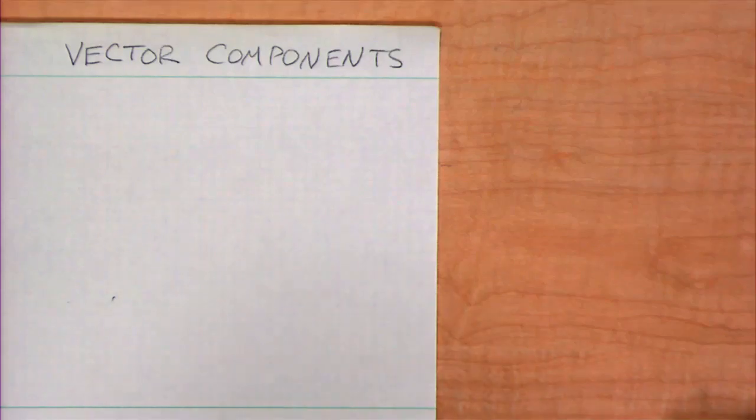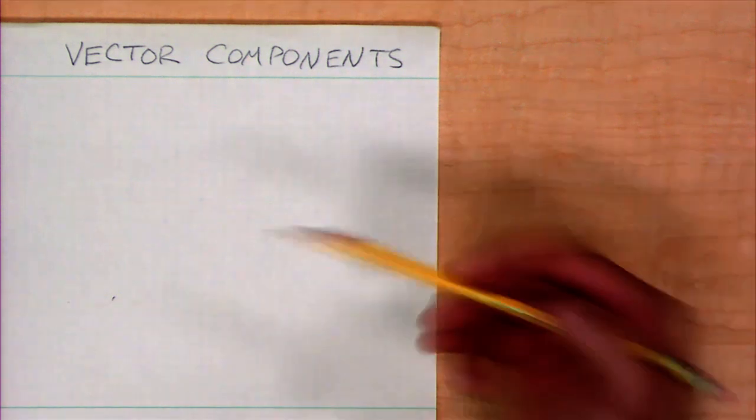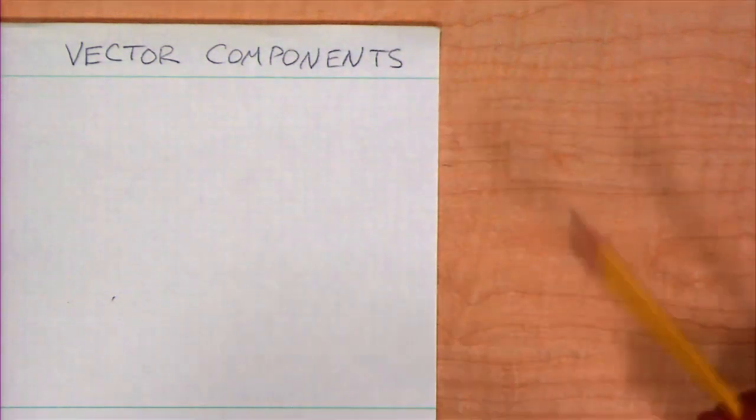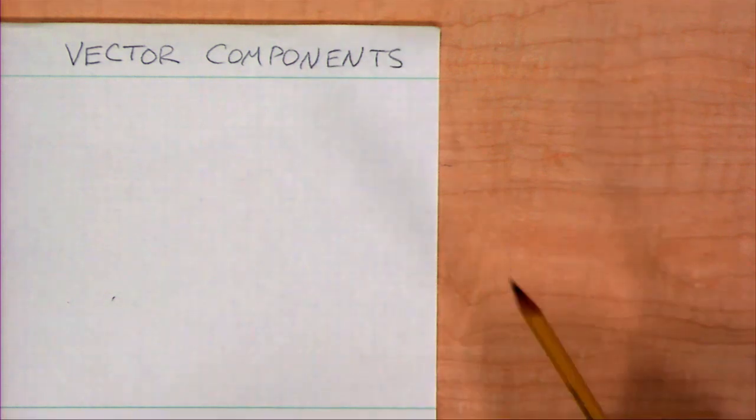Let's talk a little bit about vector components. I have a vector. I have represented it graphically on a piece of paper. Actually, it's over here on this piece of paper, but I'm not going to show it to you quite yet. It has a magnitude and a direction, and I want you to draw my same vector on a piece of paper of your own.